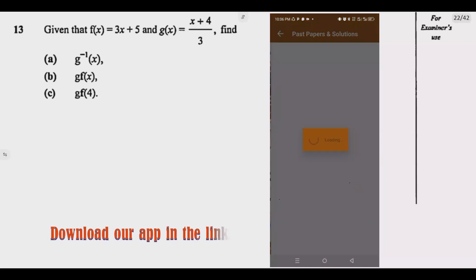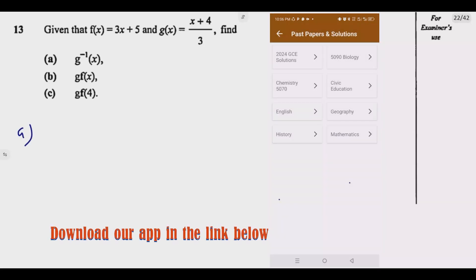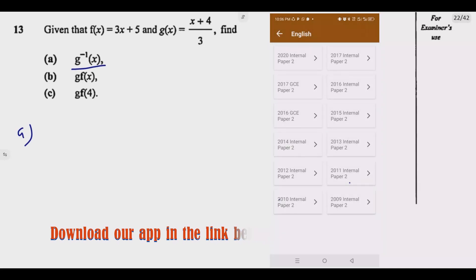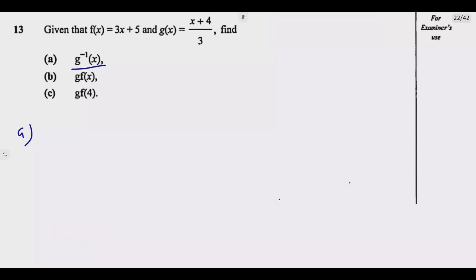So let us start with part a. Here we are finding this. The first thing that we need to do is, let y equals g(x). So what I have is y equals (x plus 4) over 3. I've just replaced this expression. Then at this point, we need to solve for x.